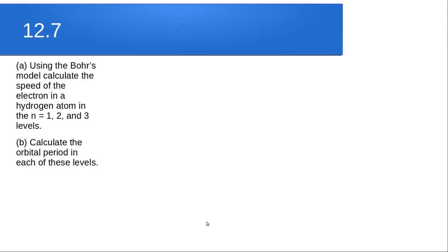Question 12.7: using Bohr's model, calculate the speed of the electron in a hydrogen atom in n = 1, 2, and 3 levels, and calculate the orbital period in each of these levels. They ask for the speed of the electron as it orbits the nucleus in the first three orbits, and also the time for one complete revolution in each.